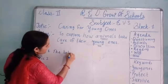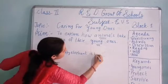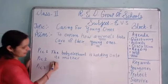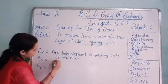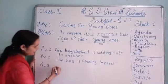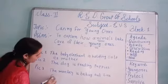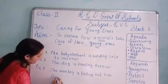Yes student, tell me: what are the animals doing in pic 1? The baby elephant is holding onto its mother. In pic 2: the dog is feeding puppies. The monkey is taking lice from the baby monkey's head.